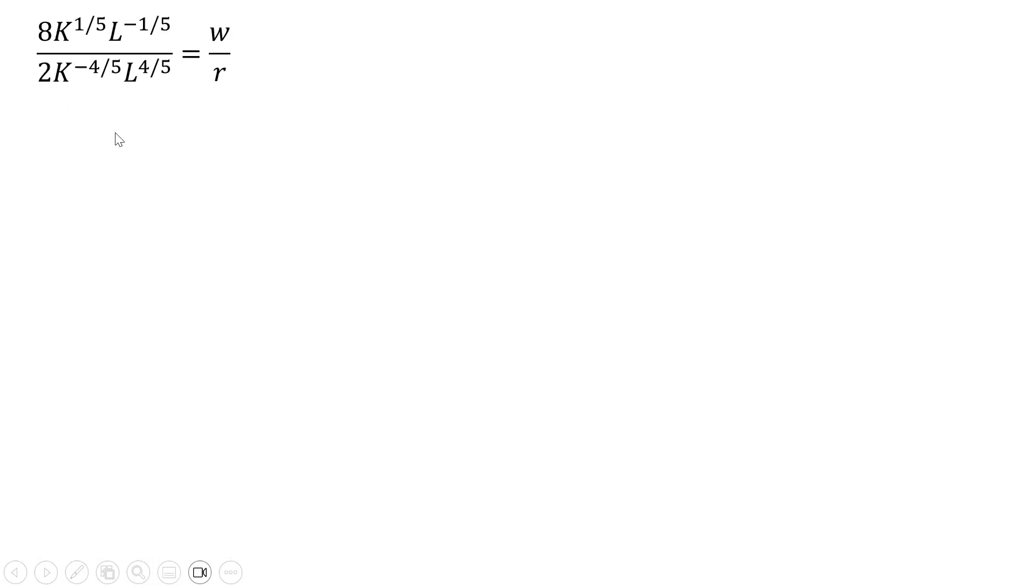Rewriting the last result here and simplifying, 8 divided by 2 gives us 4. And now let's move these exponents around. Let's move this K to the minus four-fifths into the numerator, and this L to the minus one-fifths into the denominator. So after making those moves, and now we can add up the exponents on the K and L terms.